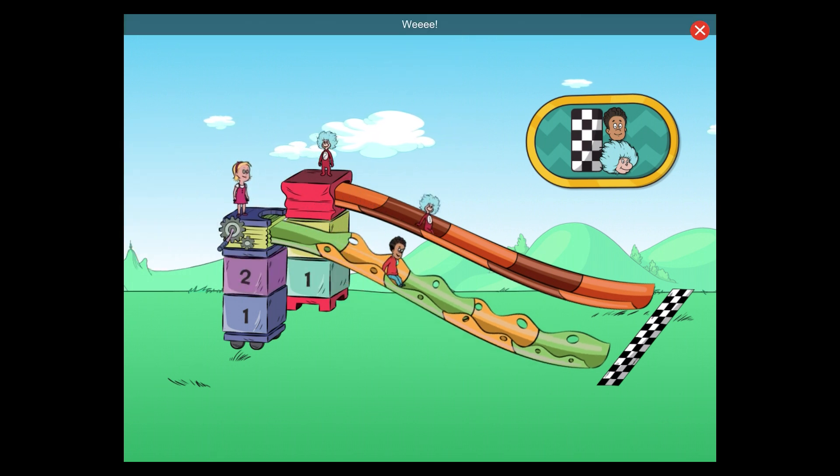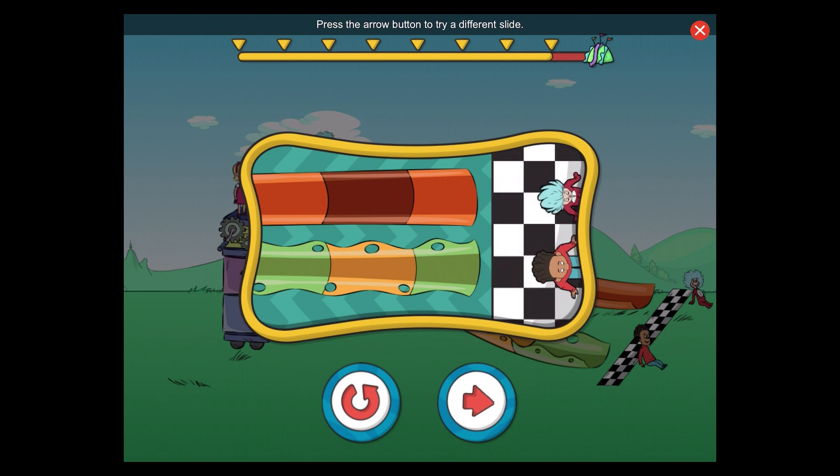Let's go across the finish line at the same time as the things. Whee! Well done! We tied with the things, just like our goal. Press the arrow button to try a different slide or press the curly arrow to try the same slide again.